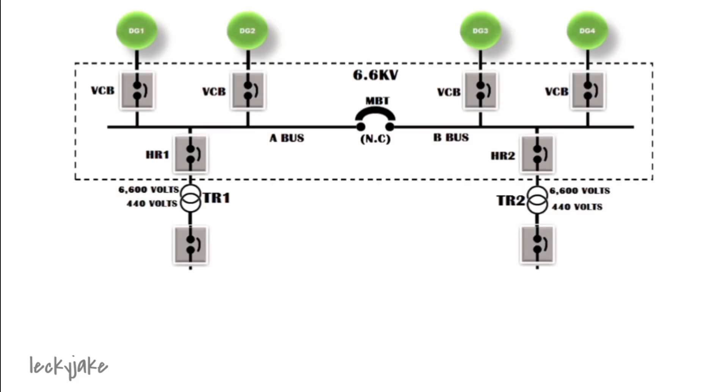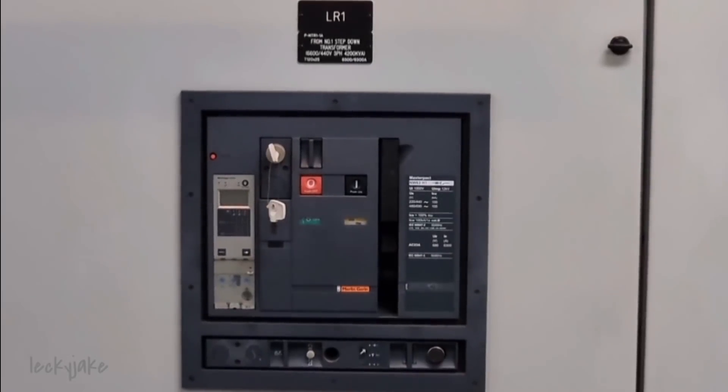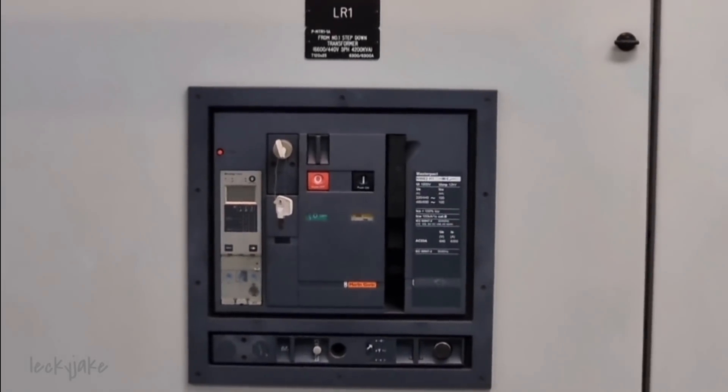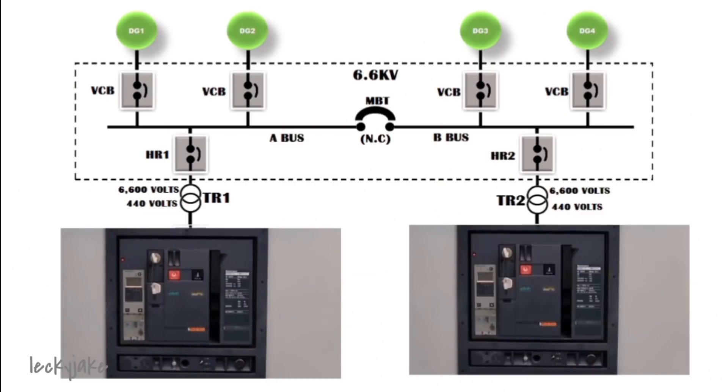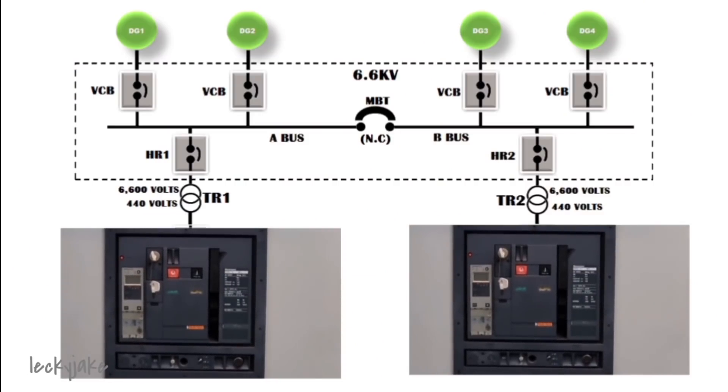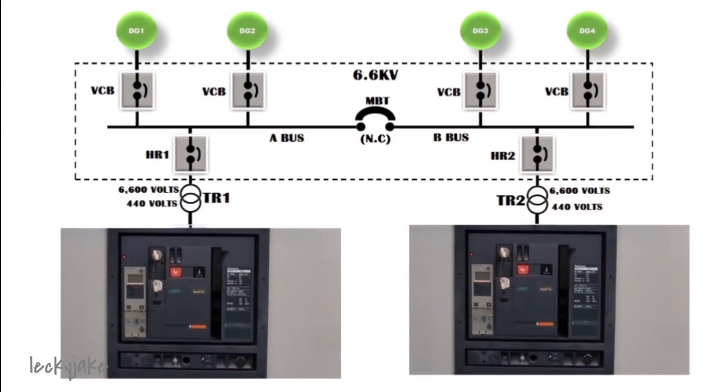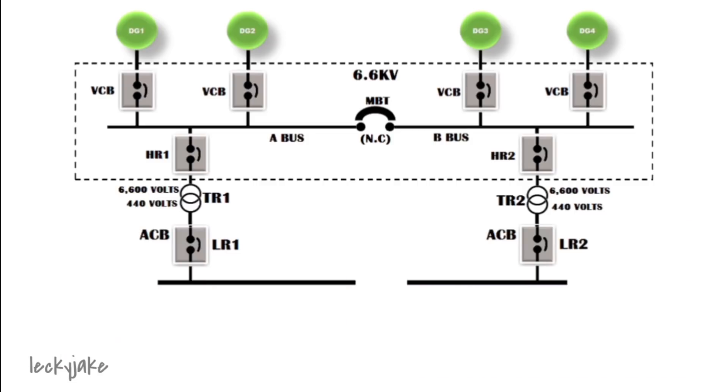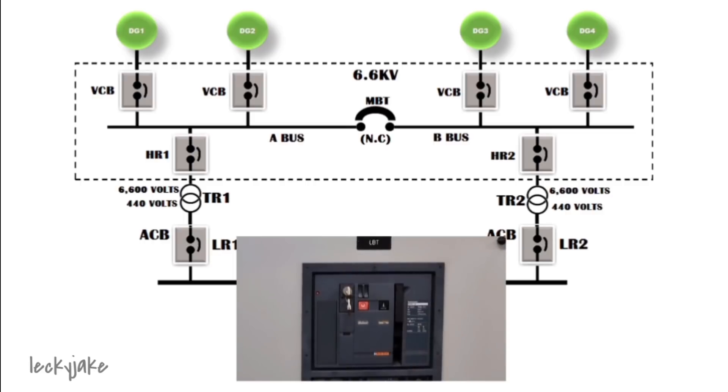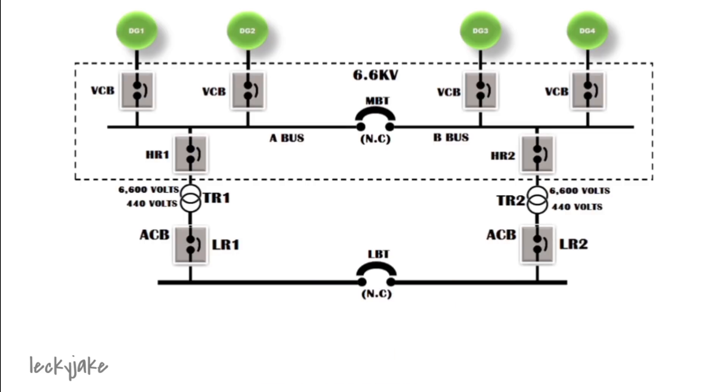Since the primary is 6600 and the secondary will be 440 volts, this will pass then to a breaker which is an ACB or an air circuit breaker. Again, this is a Korean built vessel so they are using LR for tagging of the low voltage breaker. It is the same setup with the 6600 volts, they are also having this low voltage bus tie. These two air circuit breakers are mechanically interlocked to ensure that only one transformer can feed the 440 section at any time.